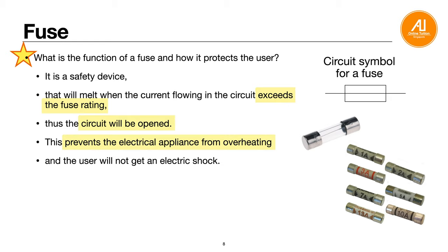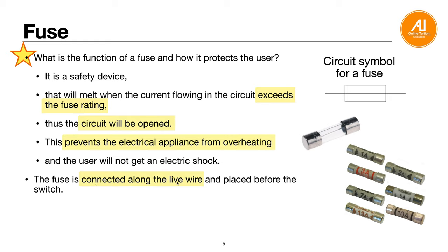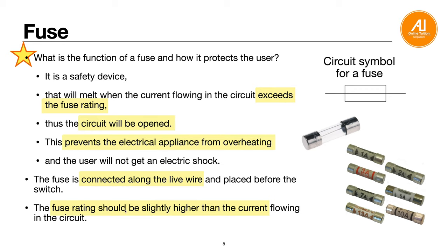Make sure you know how to draw the fuse symbol. The fuse should always be connected along the live wire, because the current comes in from the live wire - you want to stop the current right at the start. Ideally it should be placed before the switch so the user will not get an electric shock. Also, the fuse rating should always be slightly higher than the current flowing in the circuit. For example, if the current is 5 ampere, choose a 6 ampere fuse rating - slightly higher, not exactly the same, otherwise it would blow immediately.